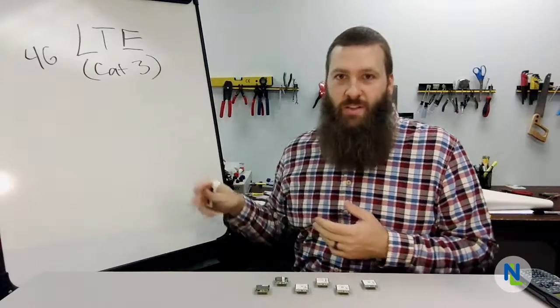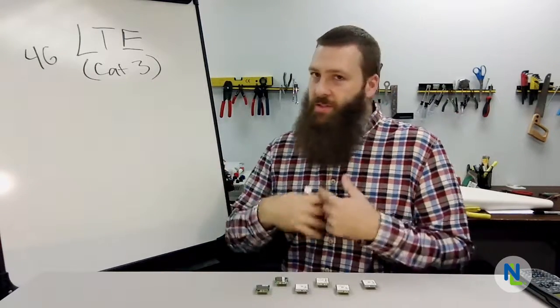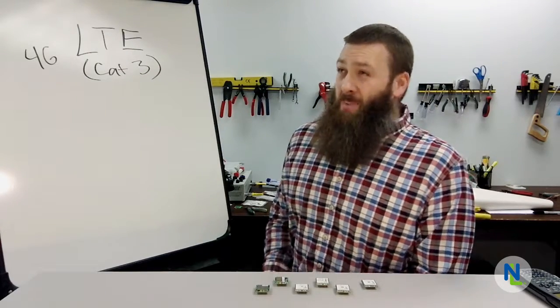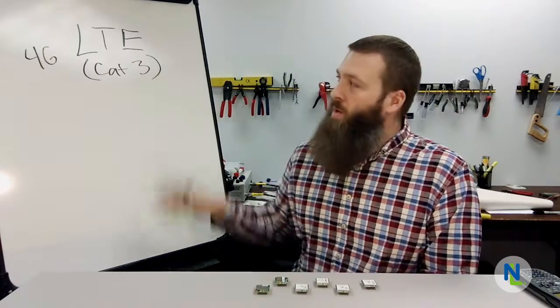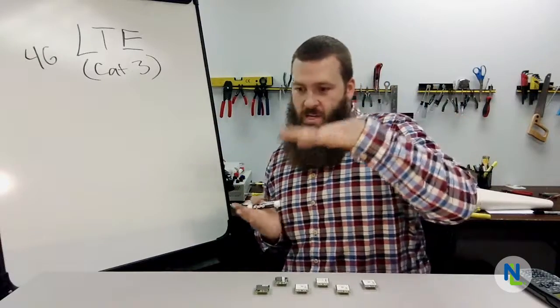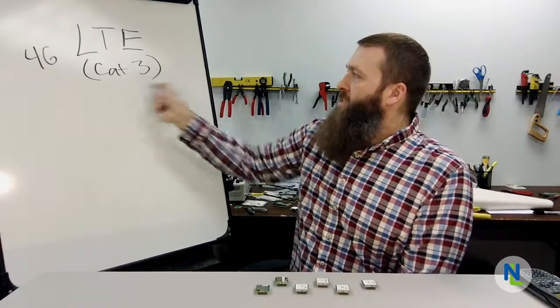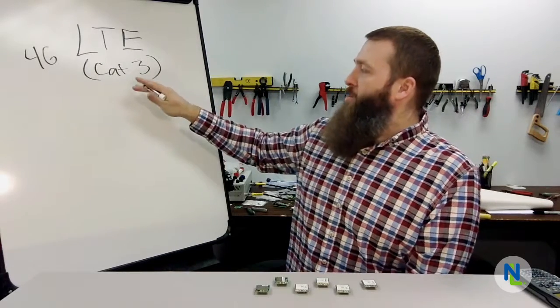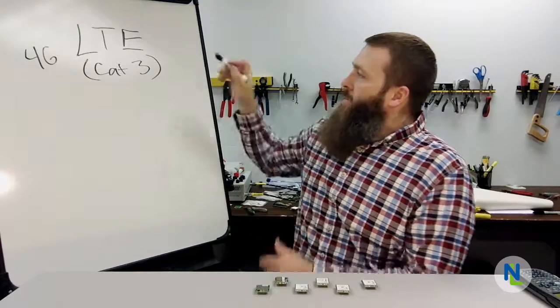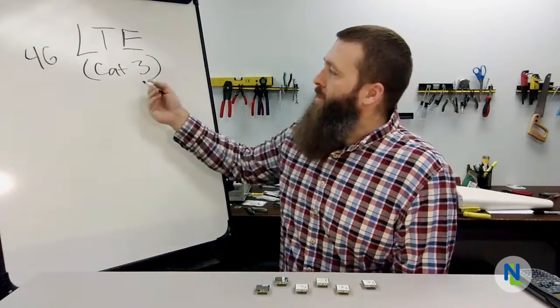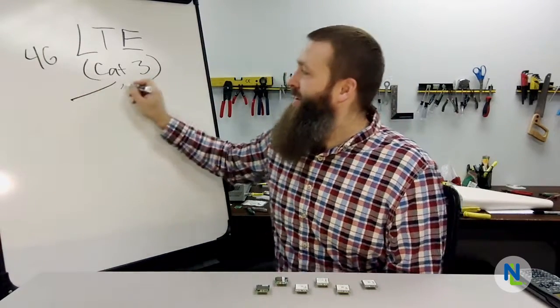There's also the different frequencies that the world has decided to utilize for deploying their LTE networks, basically trying to find spectrum, find available space anywhere they possibly can to use for LTE. So you ended up, I think right now we're somewhere around 42 different frequencies that are used for LTE deployments in the world. So LTE here is not the same as LTE there, or even LTE on one carrier is not the same as LTE on another carrier. They're incompatible, so you can't necessarily take an LTE radio and use it on another carrier's network. So we started with Cat 3. What is this Cat 3 thing?